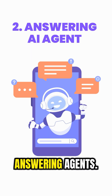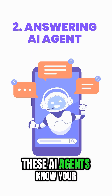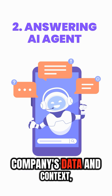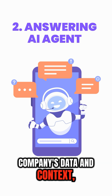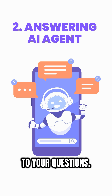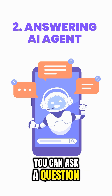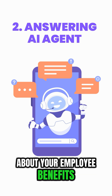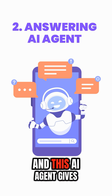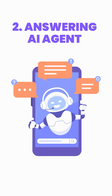Next up, Answering Agents. These AI agents know your company's data and context, so they provide tailored answers to your questions. For example, you can ask a question about your employee benefits and this AI agent gives a tailored answer specific to your company.